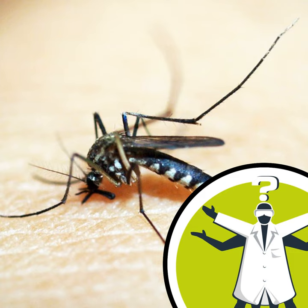The H antigen is found on all blood types, so if you only have that, you've got type O blood and can give to others — especially mosquitoes, apparently.